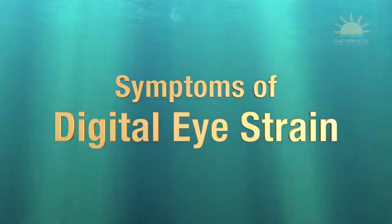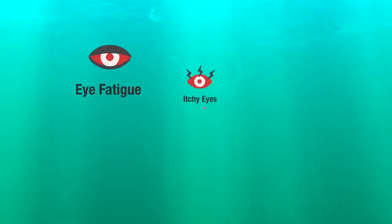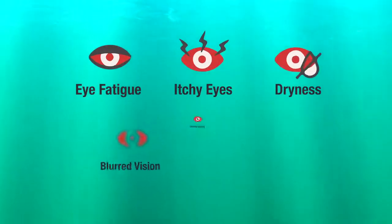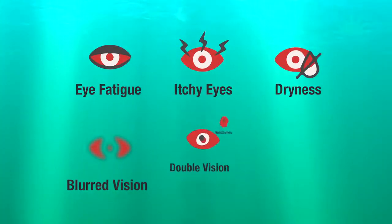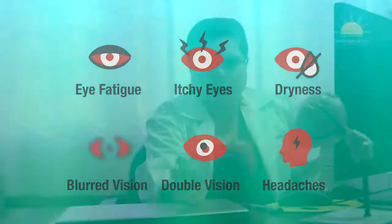The symptoms of digital eye strain include pain, redness, watering, blurred vision, double vision, headache, neck pain, and even generalized fatigue. These symptoms are especially more pronounced towards the end of your workday. The popular rule to avoid computer vision syndrome is the 20-20-20 rule.